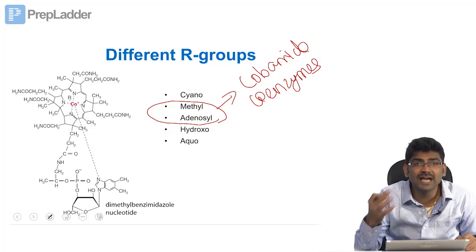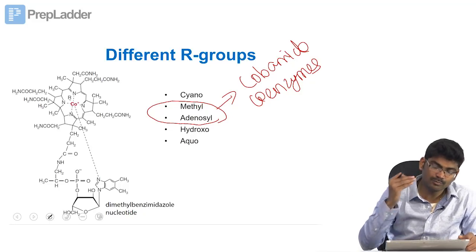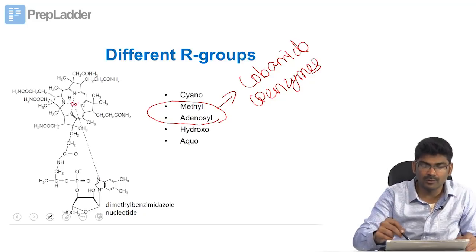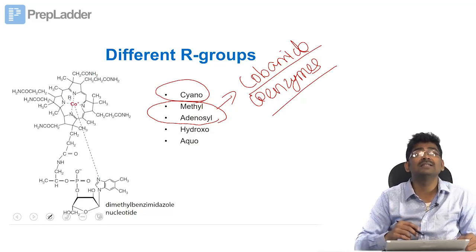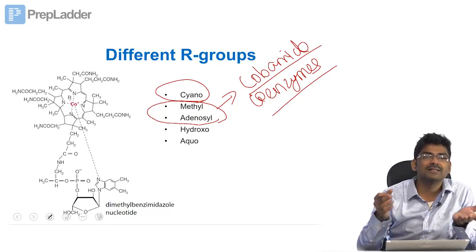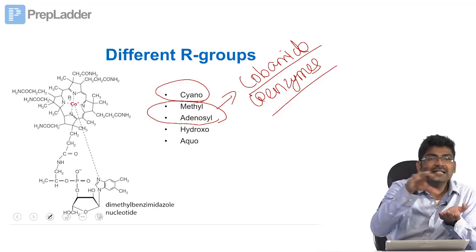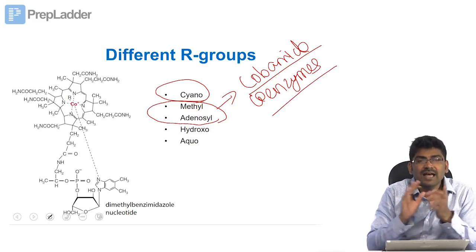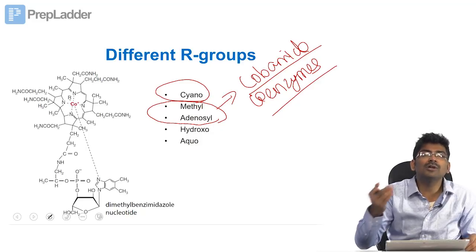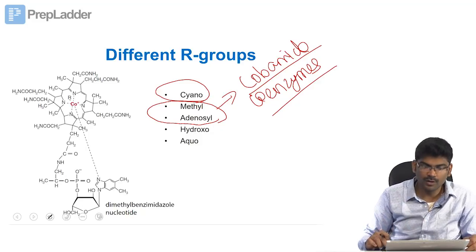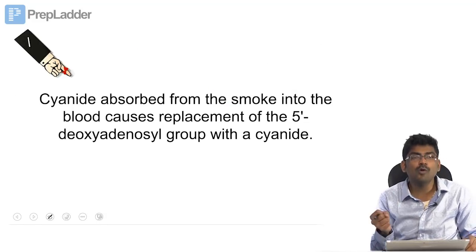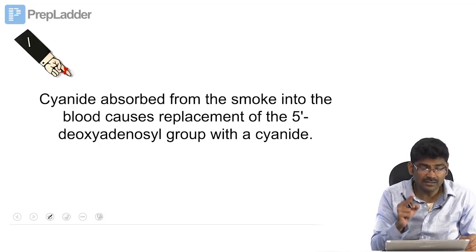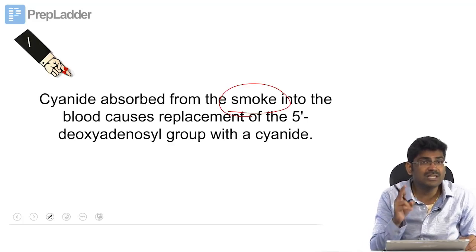Just as thiamine has thiamine pyrophosphate as its coenzyme form, methylcobalamin and adenosylcobalamin are the coenzyme forms of vitamin B12 — known as cobamide coenzymes. Cyanocobalamin is not found in the body; it is produced in the industrial synthesis of vitamin B12 from microbes. Unless you are a smoker, you would not have significant cyanocobalamin in the body. Cyanide absorbed from cigarette smoke into the blood replaces the adenosyl group to produce cyanocobalamin. So smokers, be aware.